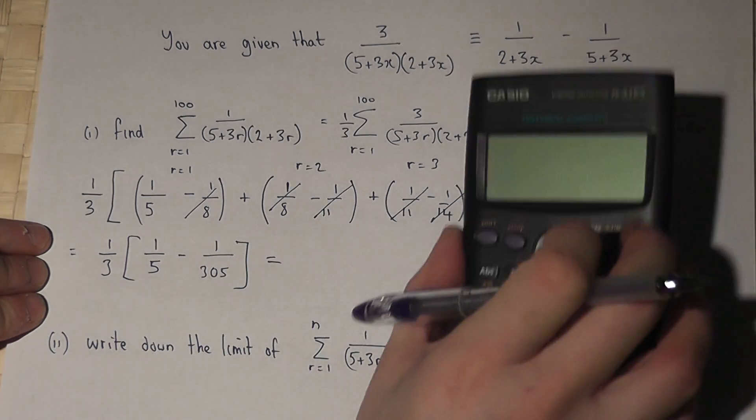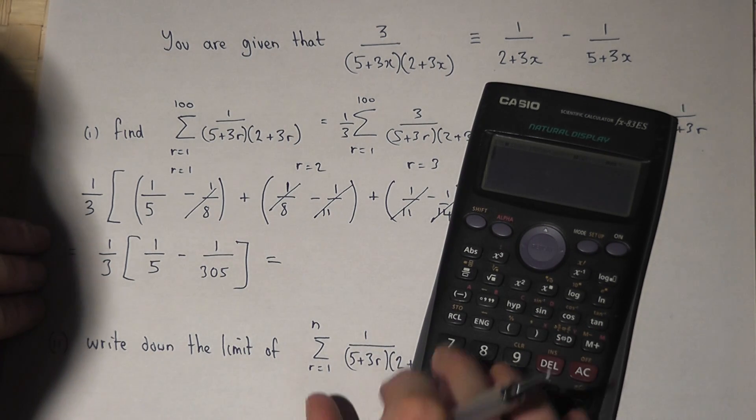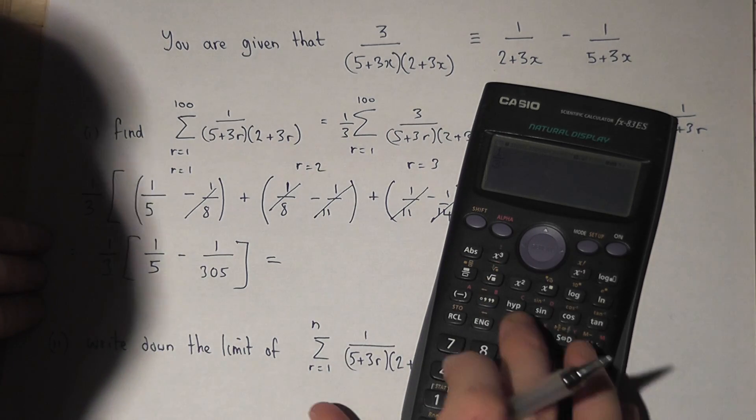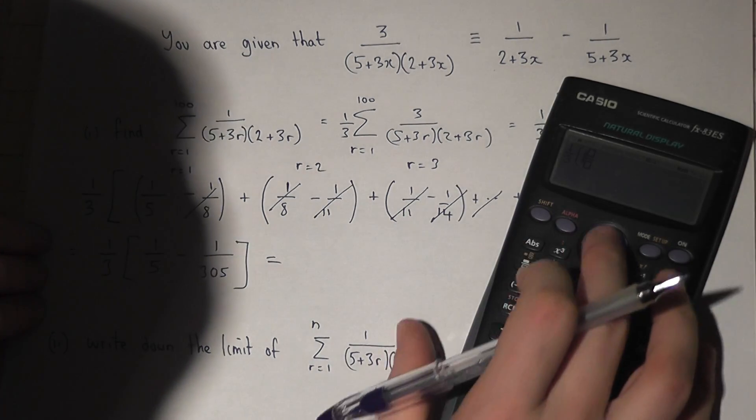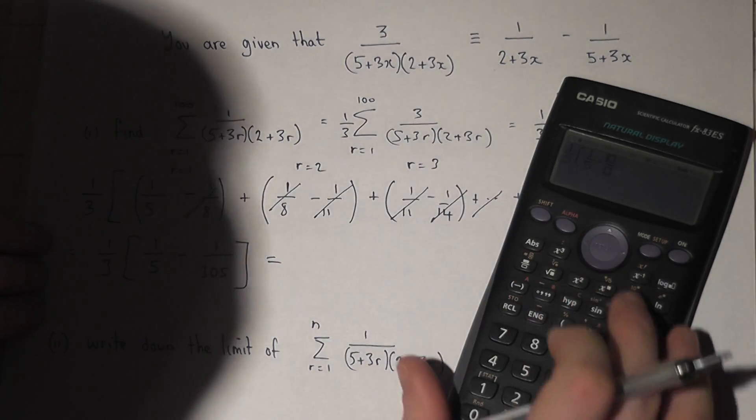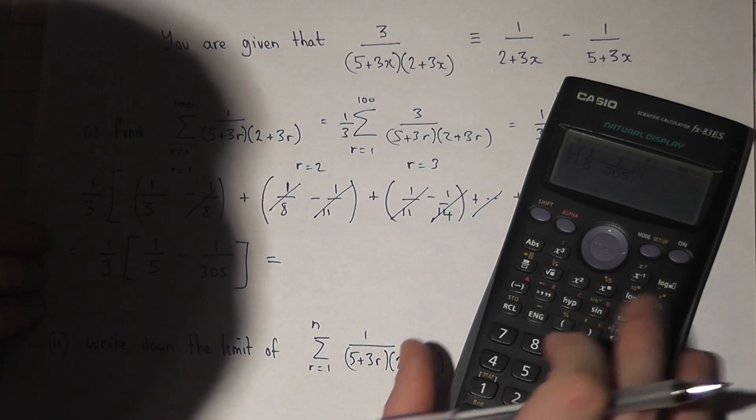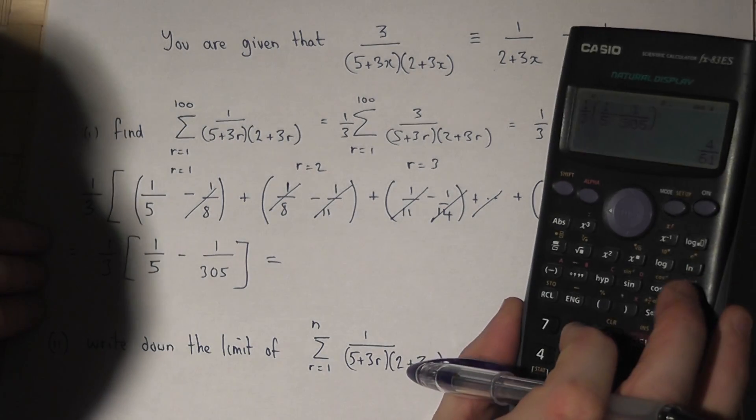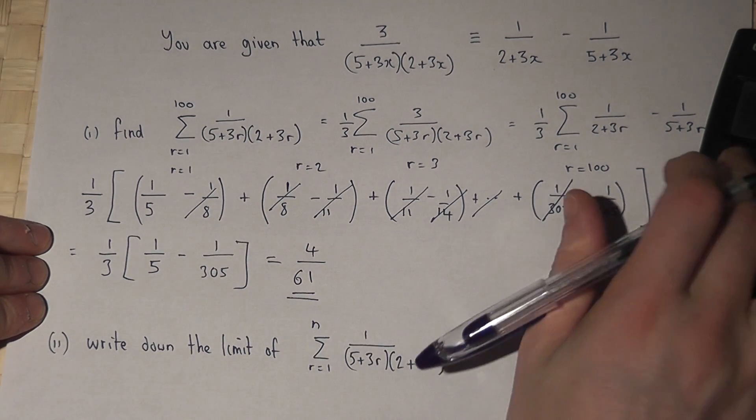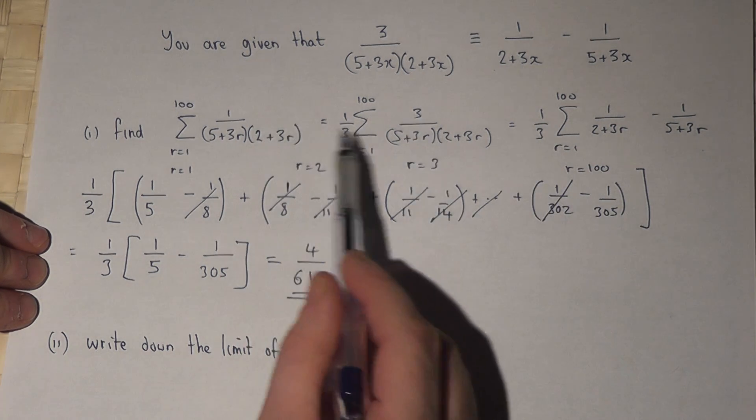If I put this into my calculator to save some time, I have 1 over 3, open bracket, 1 over 5 take away 1 over 305, close the bracket, press enter, and the answer is 4 over 61. So 4 over 61 is the exact answer to this given summation.